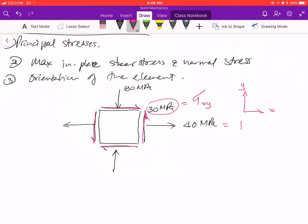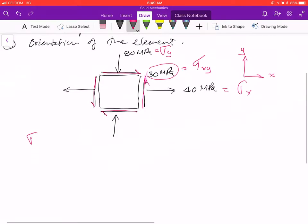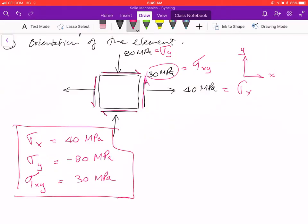This 40 MPa is actually σx, and your 80 MPa is σy. So this is pretty much what the numbers are when you have the stress elements with the orientation. So my σx is 40 MPa, my σy, which is going down, so negative 80 MPa, and τxy is 30 MPa. These are the information that I get from the stress elements.